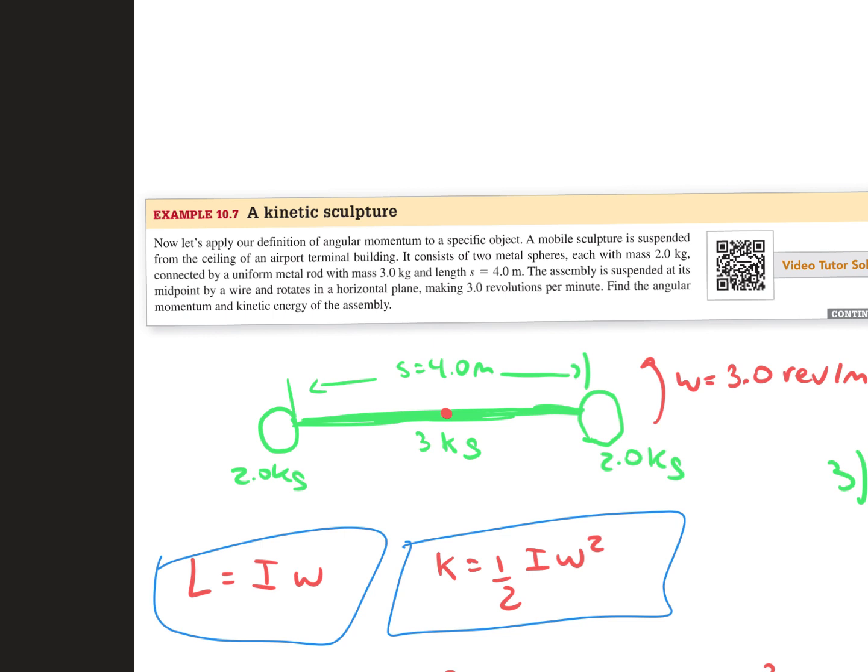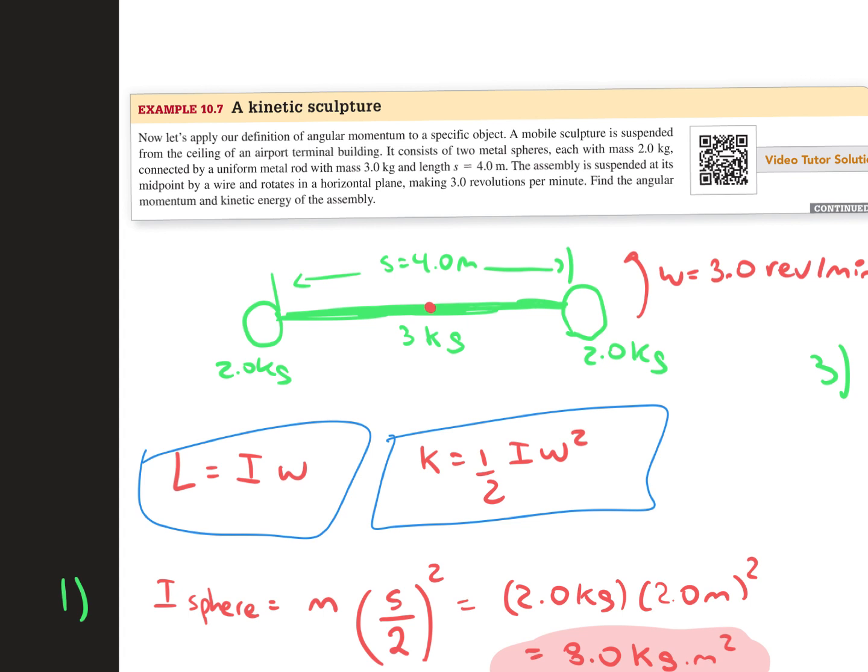The assembly is suspended at its midpoint by a wire and it rotates in a horizontal plane, making 3 revolutions per minute. The question is to find the angular momentum and the kinetic energy of the assembly.